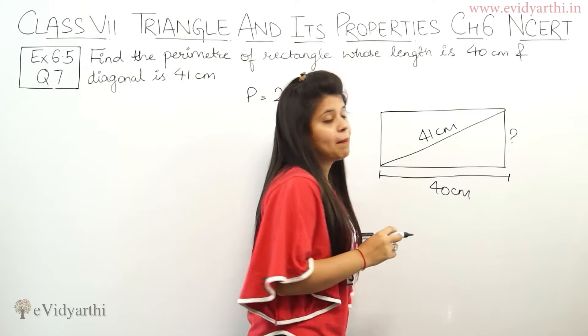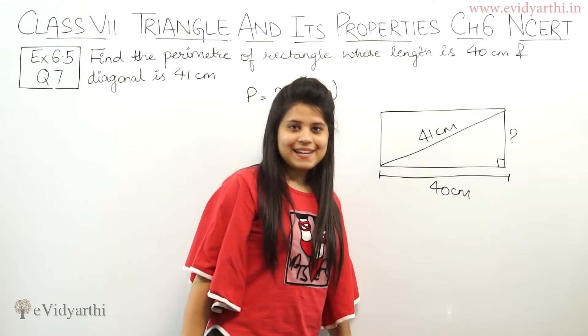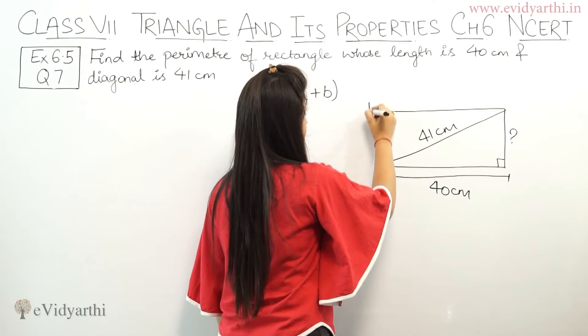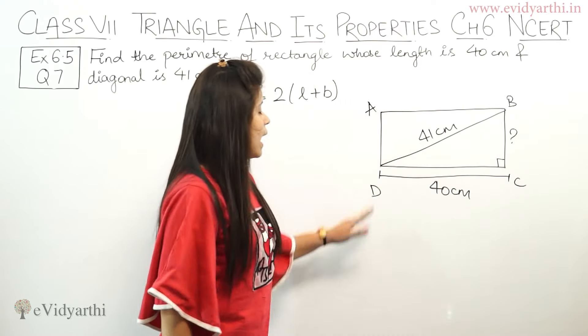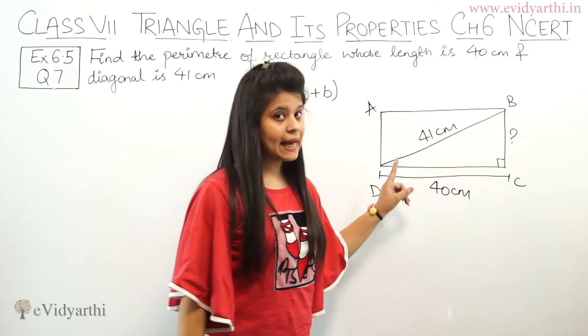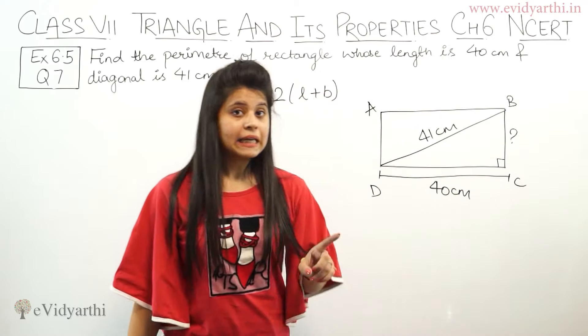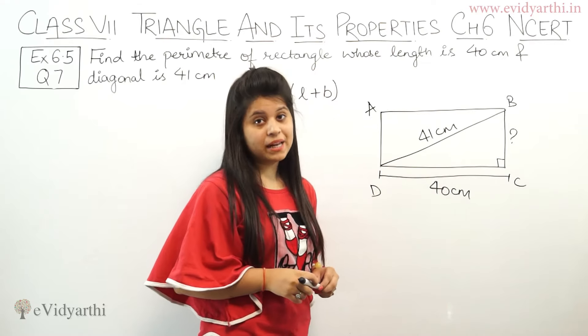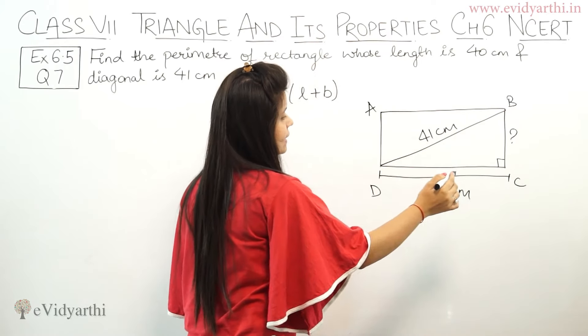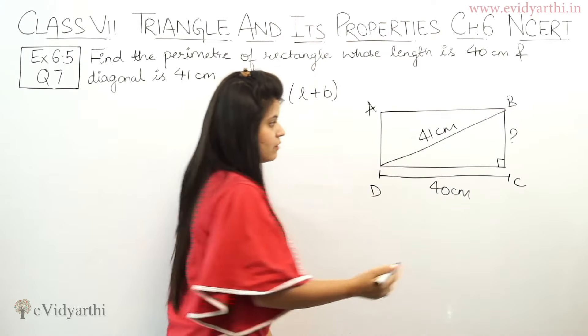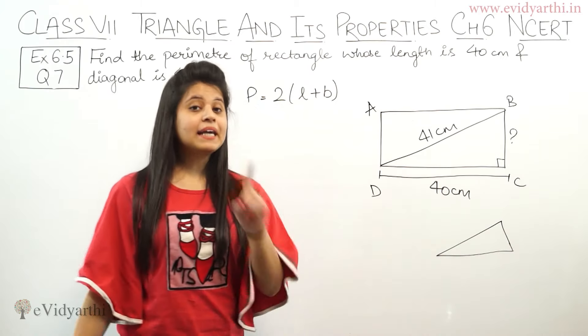So now we know that the rectangle has 90 degree angles. So first let's name the vertices A, B, C, D. So now we have BD as the diagonal given. This is base given. And here is BC. We have a triangle formed and a right angle.